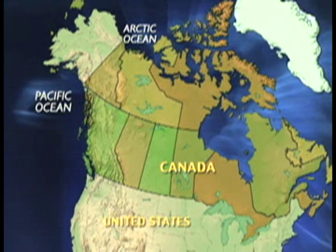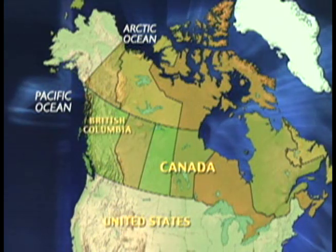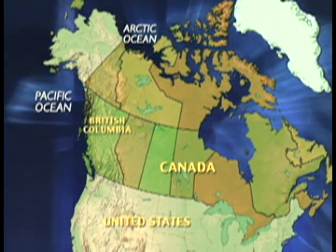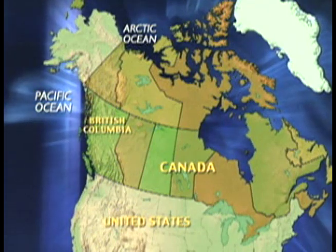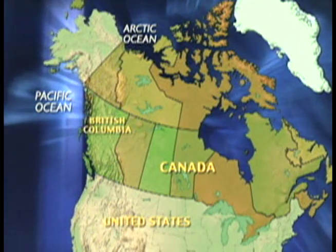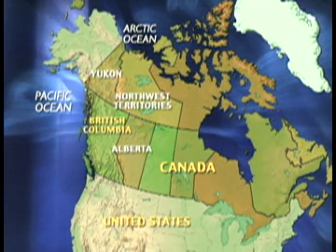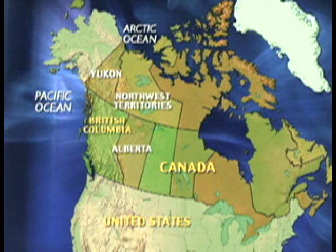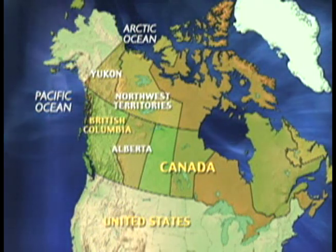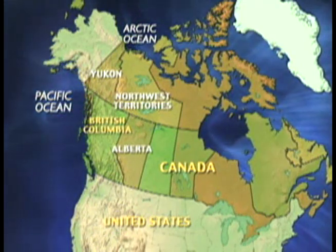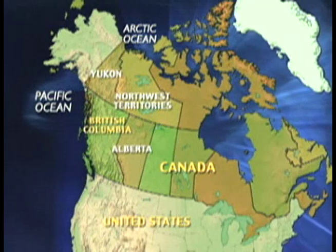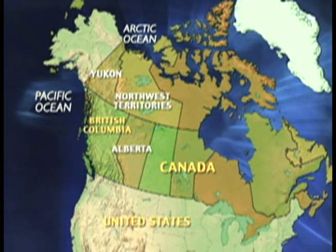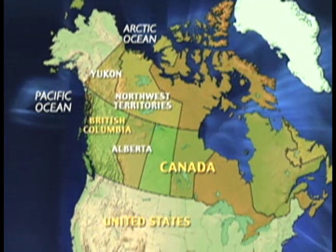At the westernmost edge of Canada, separated from the rest of the country by the Canadian Rockies, sits British Columbia. Bordered by Alberta to the east, the United States to the south, the Pacific Ocean to the west, and the Yukon and Northwest Territories to the north, British Columbia's location allowed it to quickly develop as a center for trade.